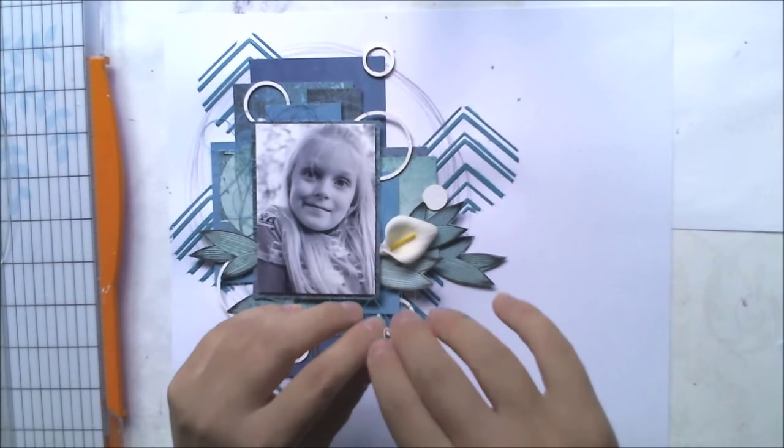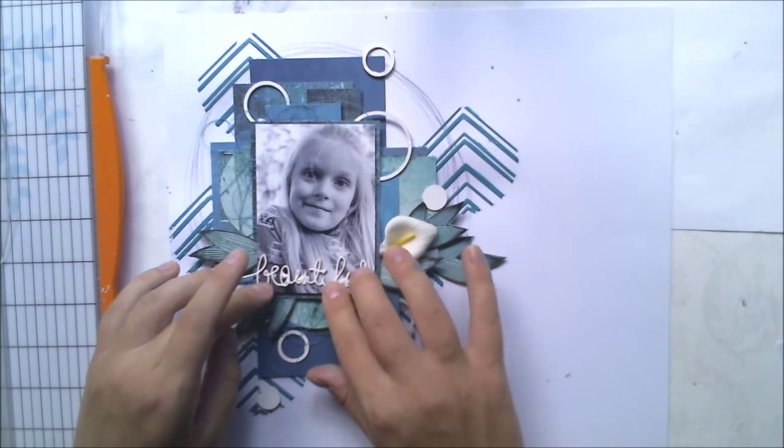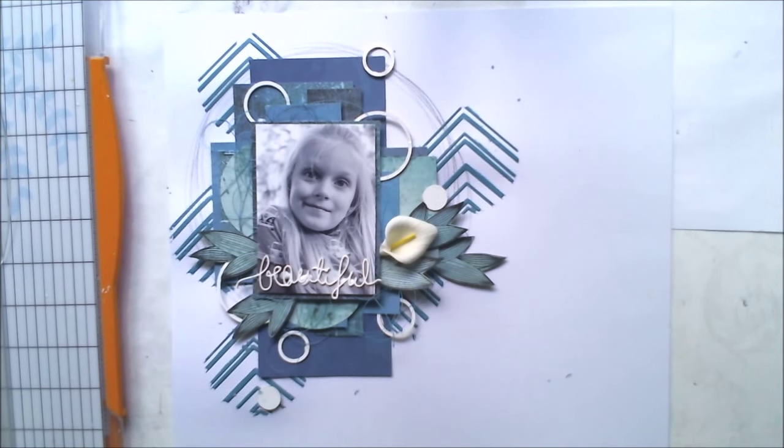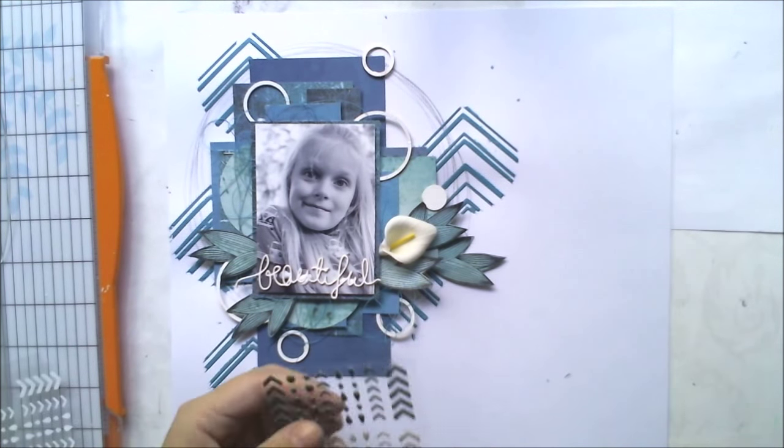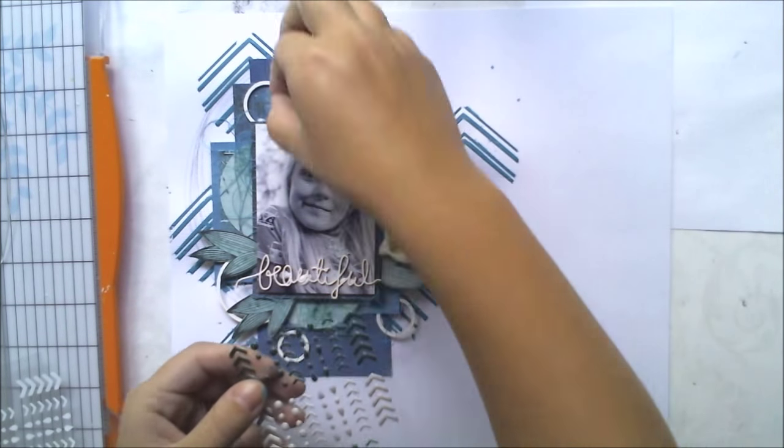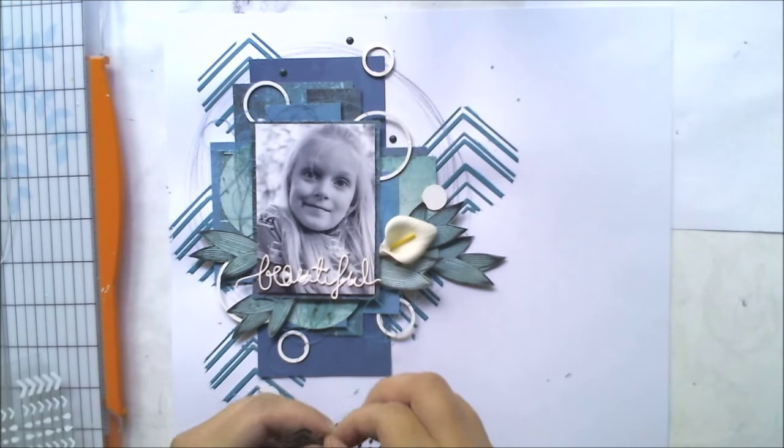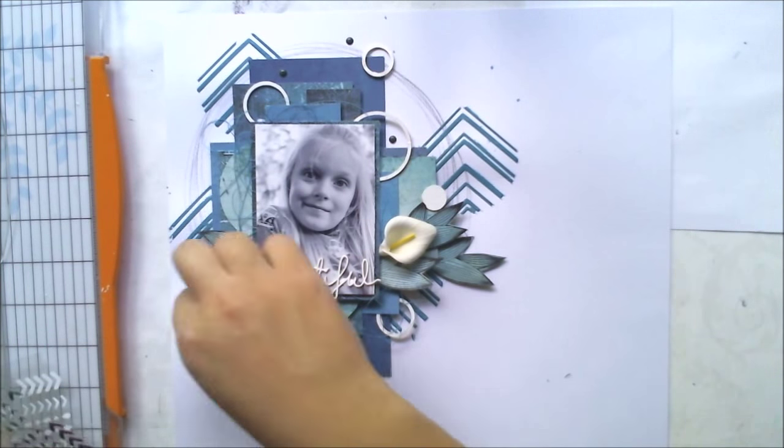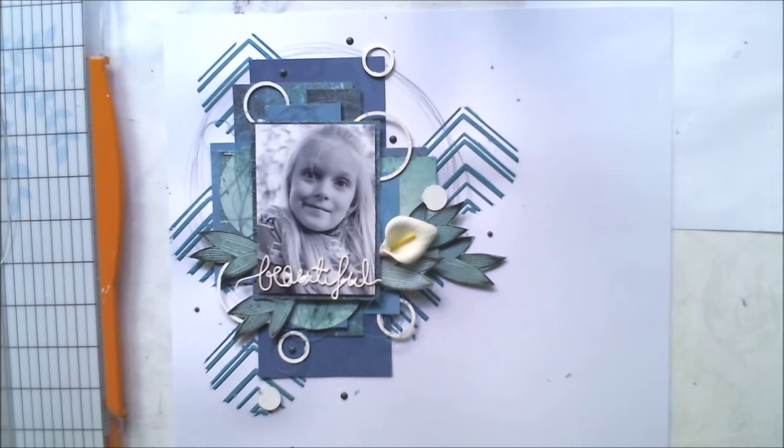I'm also using glue to adhere the title, and if you feel the chipboard gets curly or something, then just put something on it. I'm also using some enamel dots from Create a Smile to create some details.